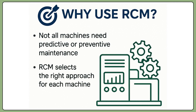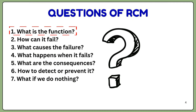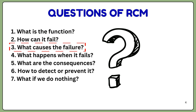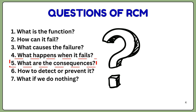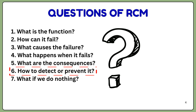When applying the RCM process to any critical asset, you should ask yourself seven questions. First: what is the function of this equipment? Second: how can it fail? Third: what are the causes for each type of failure — you write down all failure types and map each to its causes. Fourth: what happens when it fails and what is the impact? Fifth: how does it affect operations or safety? Sixth: what can we do to detect it or prevent it? And seventh: what happens if we do nothing?